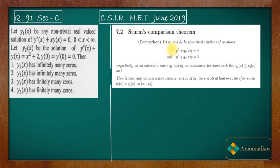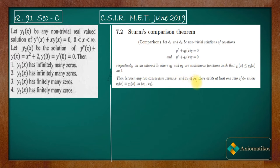Sturm's comparison theorem states: let φ1 and φ2 be non-trivial solutions of two differential equations on an interval I. If q1(x) ≤ q2(x), then between any two consecutive zeros x1 and x2 of φ1, there exists at least one zero of φ2 — unless q1 equals q2 almost everywhere.